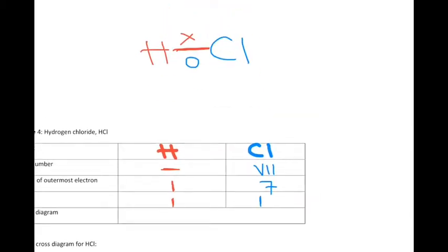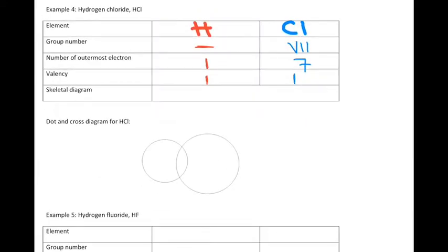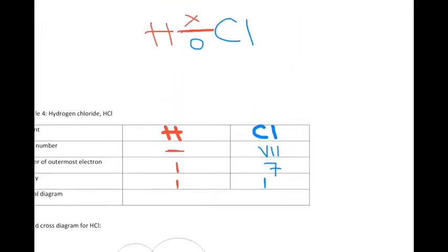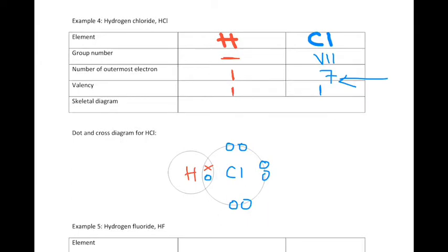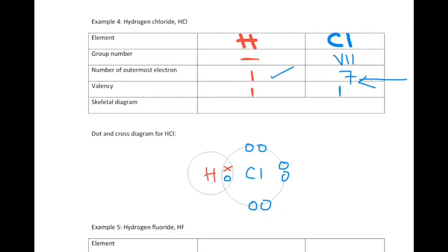Chlorine is forming only a single bond and hydrogen is forming only a single bond. In the dot and cross diagram, we have H here — I'm putting H as a small one because hydrogen has only one shell — and chlorine here. They are sharing one pair of electrons. That's the dot from chlorine and the cross from hydrogen. Chlorine should have 7 outermost electrons, so there should be 7 dots: 1 already there, 2, 3, 4, 5, 6, 7. Hydrogen has only one outermost electron, so that one cross is already there. That's the dot and cross diagram for HCl.